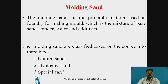Why is moulding sand required? In the foundry process, we need to create a moulding cavity. For creating the cavity, we use a mould box consisting of two parts: the upper part called the cope and the lower part called the drag — this mould box is also known as a flask. We place a pattern in the drag portion, fill sand around it, and ram that sand around the pattern so that after removing the pattern, we have the moulding cavity in the mould.